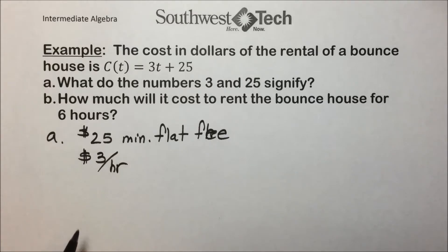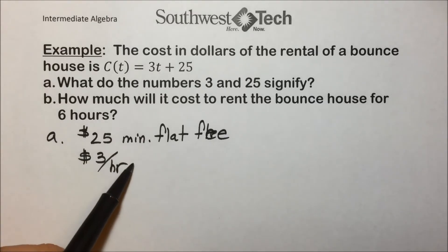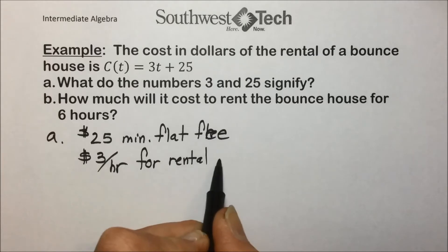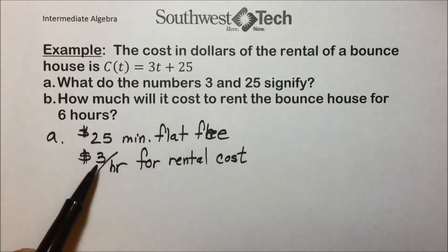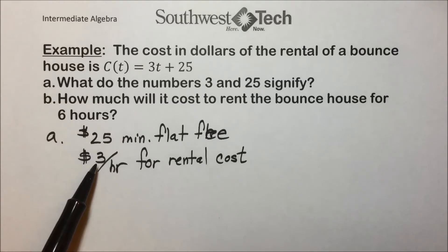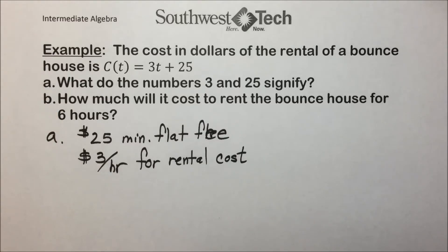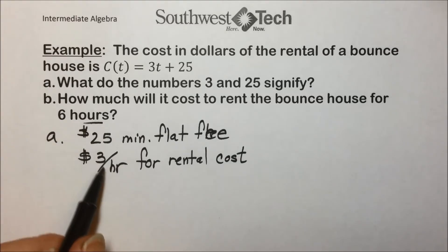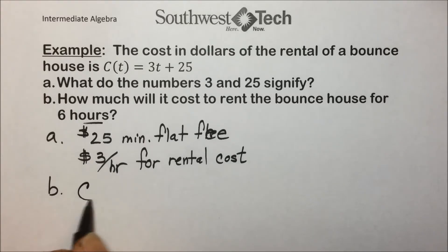Let's look at another example. The cost in dollars of renting a bounce house is given as C = 3T + 25. The first question asks what the numbers 3 and 25 signify. The 25 is not affected by anything — it's just added on. In rental agreements, there's often a flat fee, so $25 would be that minimum flat fee regardless of how long the bounce house is rented.